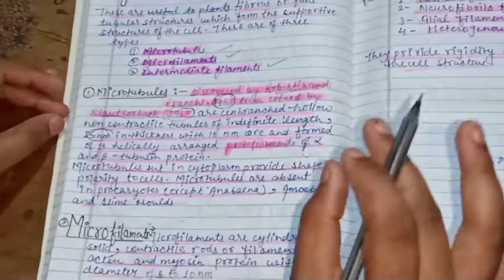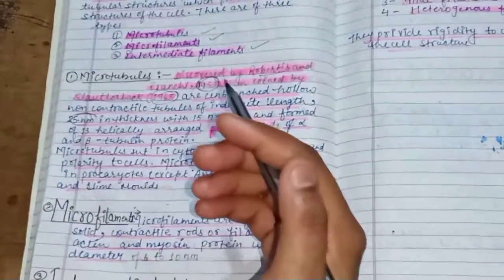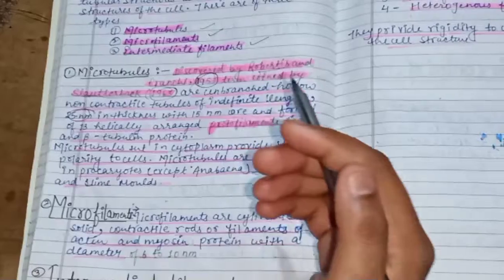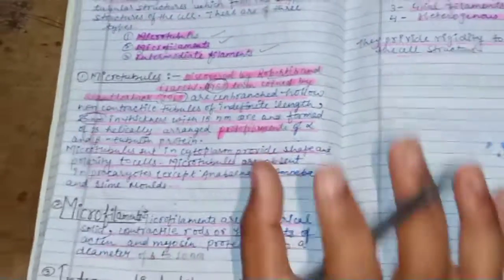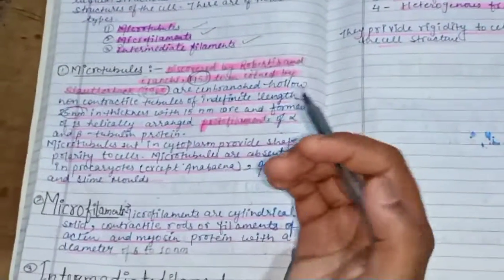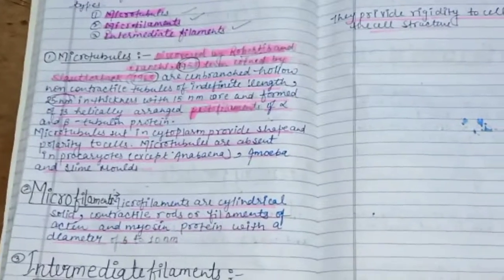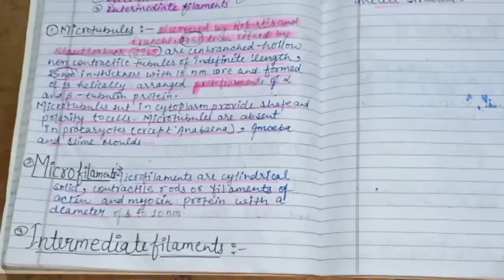Microtubules are present in cytoplasm and provide shape and polarity to cells. For example, microtubules are absent in prokaryotes except in Anabaena and amoeba and slime molds.